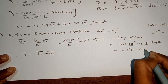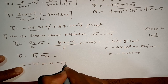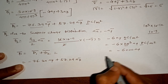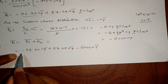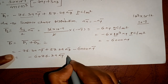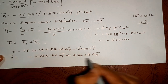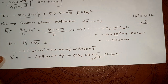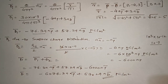Total electric flux density D = D1 + D2. D1 = -76.39 ay + 57.29 az and D2 = -6000 ay. Adding the y-components: -76.39 + (-6000) = -6076.39 ay. So the total D = -6076.39 ay + 57.29 az picocoulombs per meter square. This is the electric flux density due to both the point charge and the surface charge distribution.